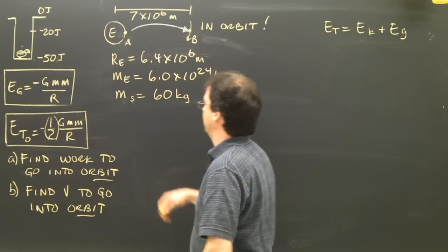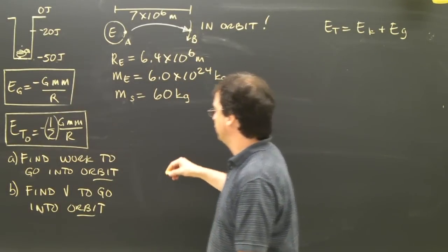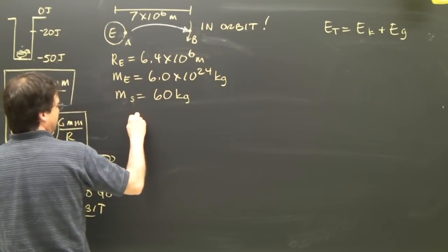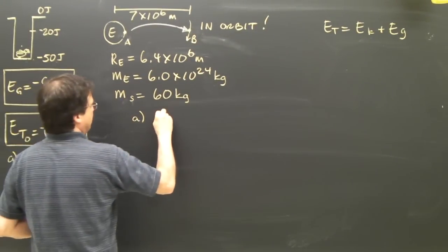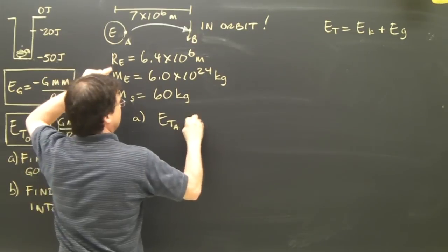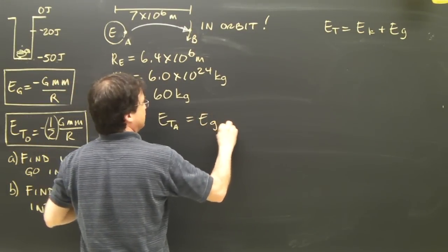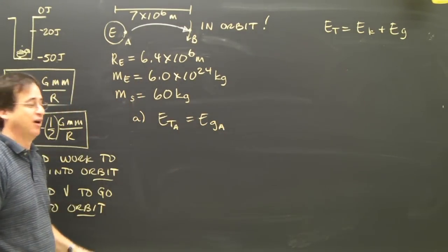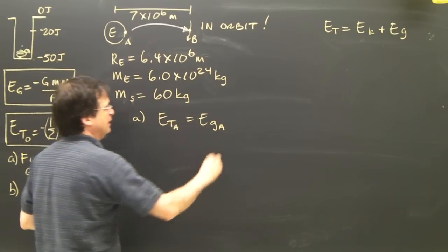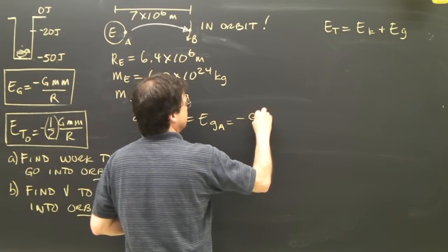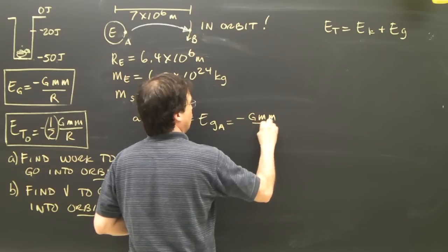So let's start our calculation. Okay, what I've got to do is I want to find the work to go into orbit. So I need the total energy at A, which in this case is the gravitational at A, because it only has gravitational energy at A. It's not in orbit and it's not moving. So that equals negative GMm over r.